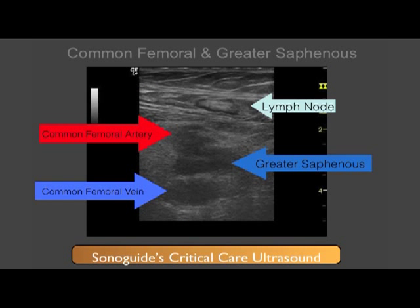Here is the actual acquired ultrasound image from this patient. You will notice from deep to superficial: the common femoral vein, the greater saphenous vein as it is branching off the common femoral, and the common femoral artery. In the most superficial portion, you will also notice an incidental finding of a lymph node.